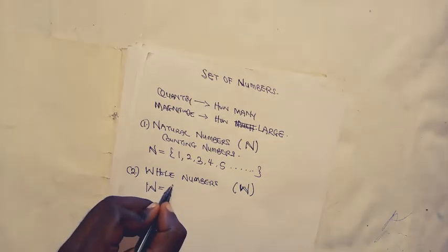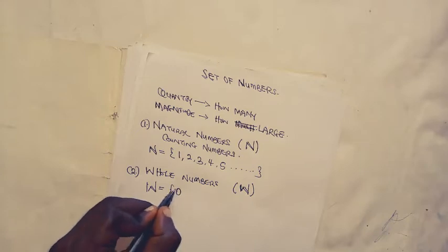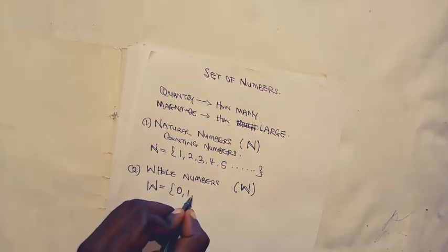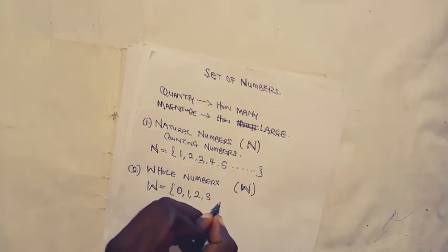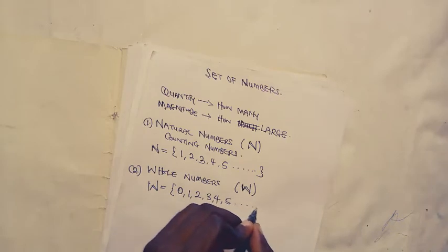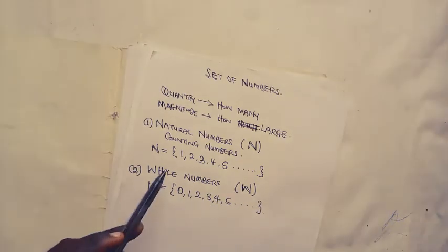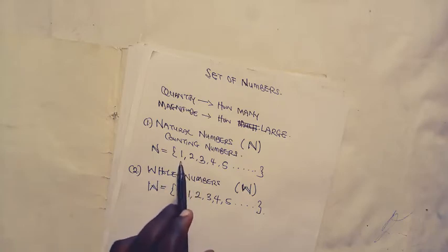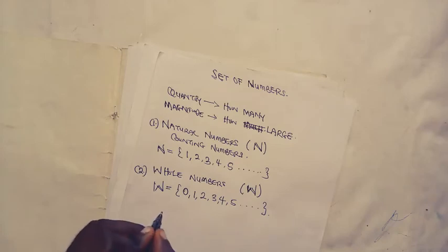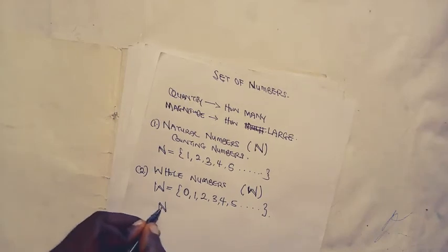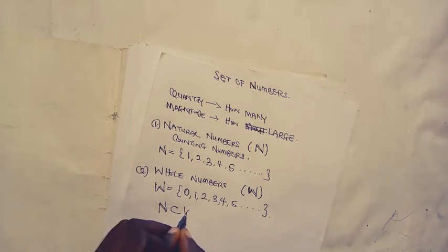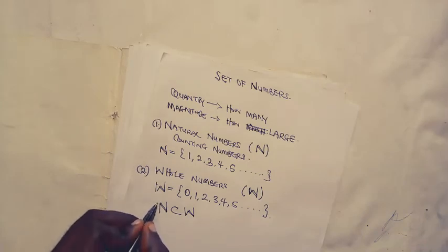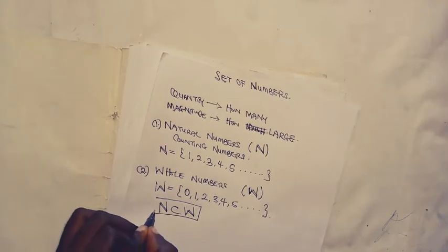The set of whole numbers is the same as the set of natural numbers, only that in whole numbers we have included zero along with the natural numbers. Zero is there to indicate the point of nothingness before we start counting. Therefore, the natural numbers are inside the whole numbers — natural numbers are a subset of whole numbers. Please note this.